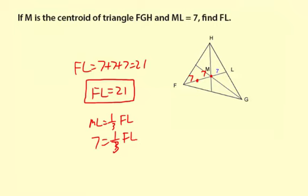We multiply by the reciprocal of one-third, which is 3 over 1, so essentially it's 3 times 7 equals FL. So 21 equals FL.